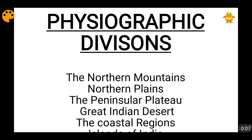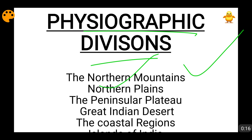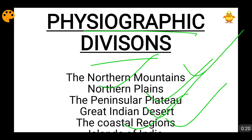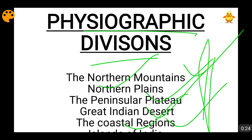I will be giving a brief idea about them because this physiographic division consists of the northern mountains, which is actually the Himalayas, then the northern plains, then the peninsular plateau of India, then the great Indian desert, then the coastal regions and then finally comes the islands of India. So all of these things will be discussed by me.